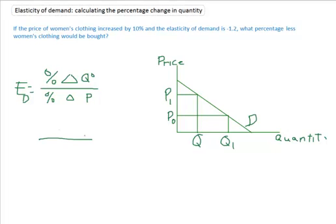So in this case, I'm going to put X because we really don't know what the change in quantity is. We know that this is 0.1, 10%. We know this is negative 1.2, and this whole thing is equal to the elasticity of demand.